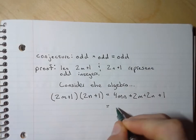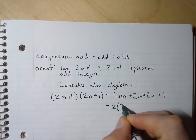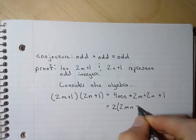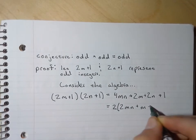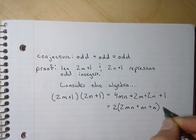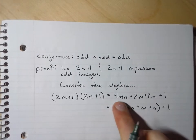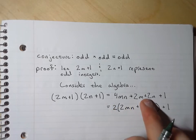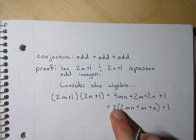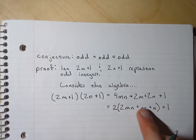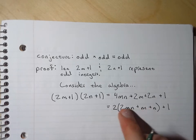2 times 2mn plus m plus n plus 1. So that's just factoring. There's a 2 in each of those terms. So let's factor that 2 out.